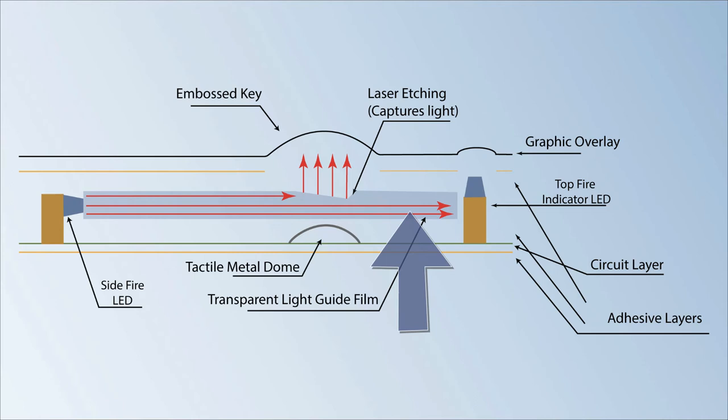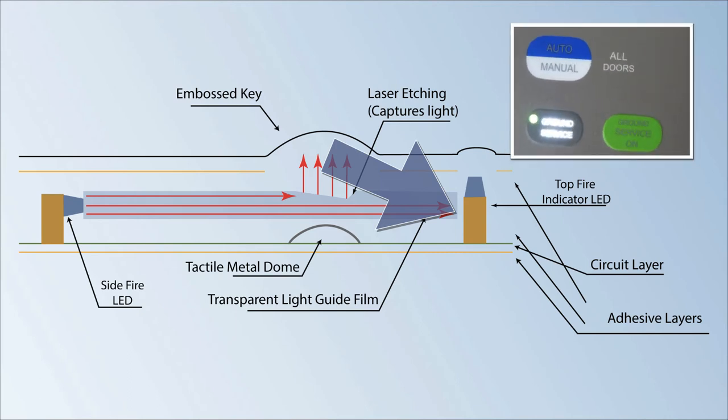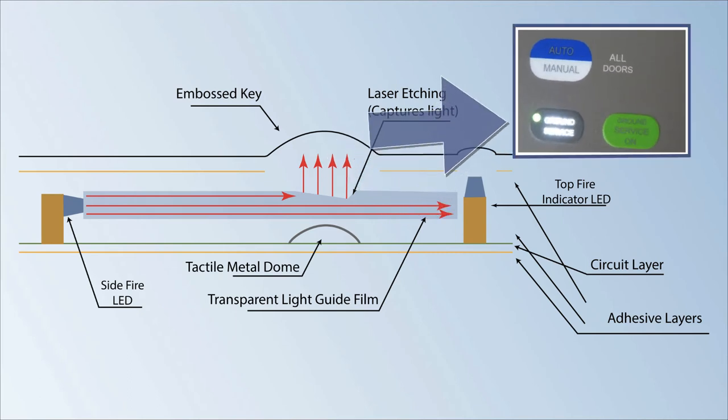This process continues until all pockets are illuminated or the light reaches the edge of the light guide film layer or a light blocking feature, like a bezel. This diagram also highlights the difference between the illuminated embossed key and the indicator LED. The indicator LED is not LGF technology. It illuminates a single point.